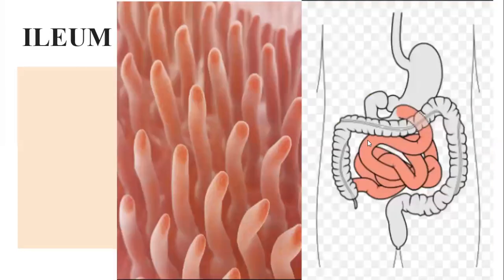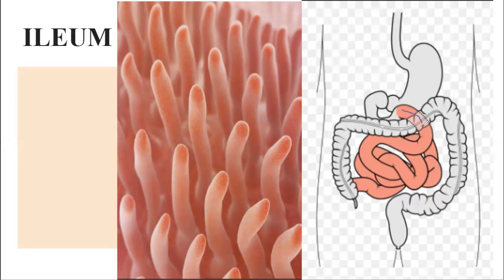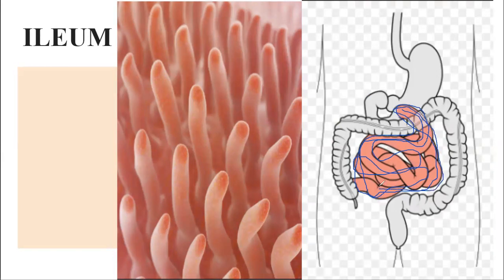Next is the ileum. The ileum is the pink-colored, coiled, long tube-like structure filling up our entire lower abdominal region. It is a long, thin tube and is the second part of the small intestine. The first part of the small intestine is the duodenum, and the second part is this coiled tube called the ileum.